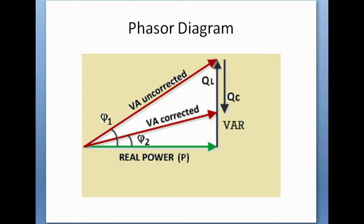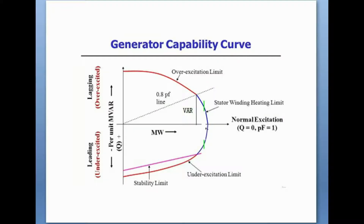Now after power factor correction, Phi 2 is the power angle between voltage and current. Cos Phi 2 is the corrected power factor. Because of this correction, we can see from this phasor diagram that the KVA demand is now reduced, as well as the reactive power requirement is also reduced.